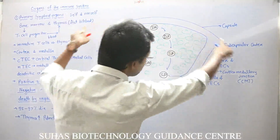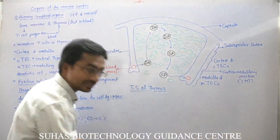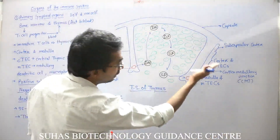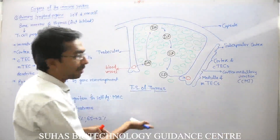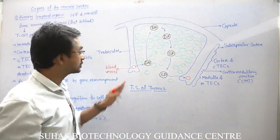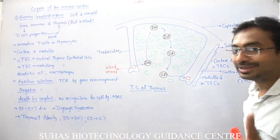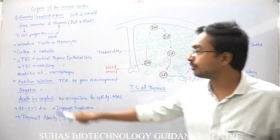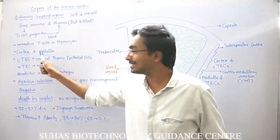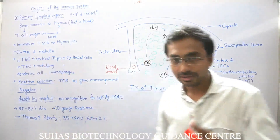If this is the complete Thymus, then there are so many compartments made by Trabeculi. In the Thymus we have mainly two regions: one is the cortex and second is the medulla.